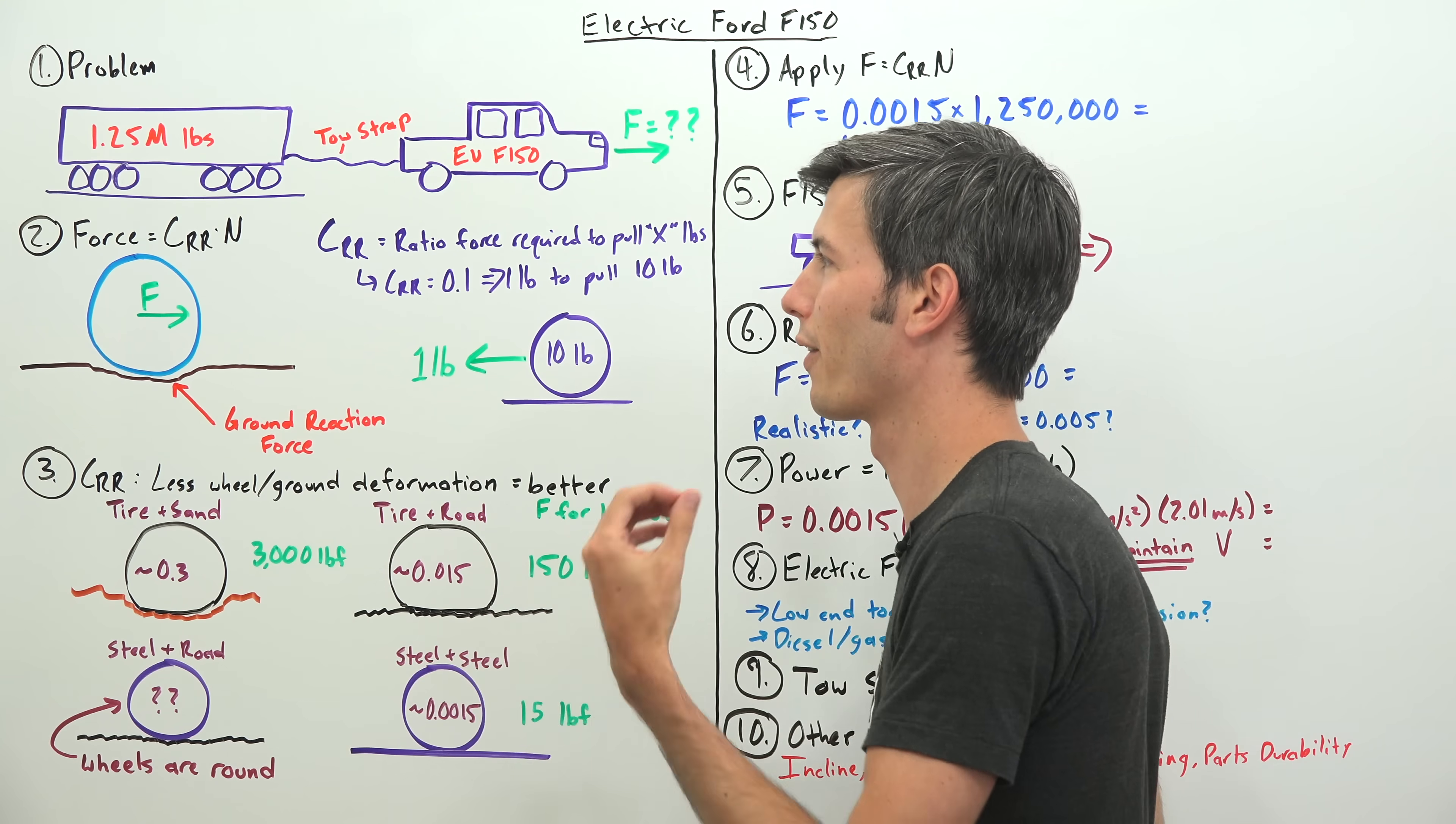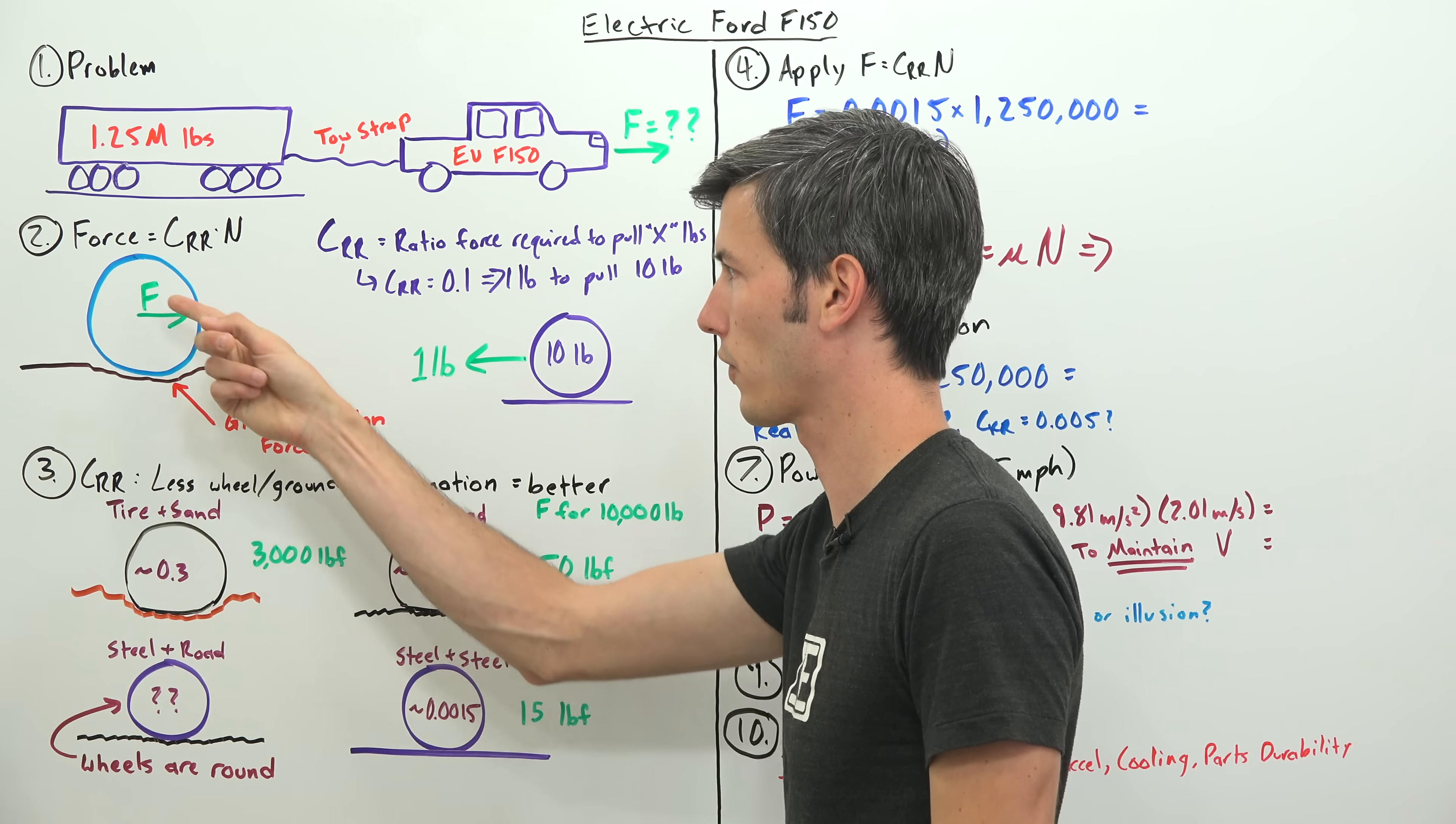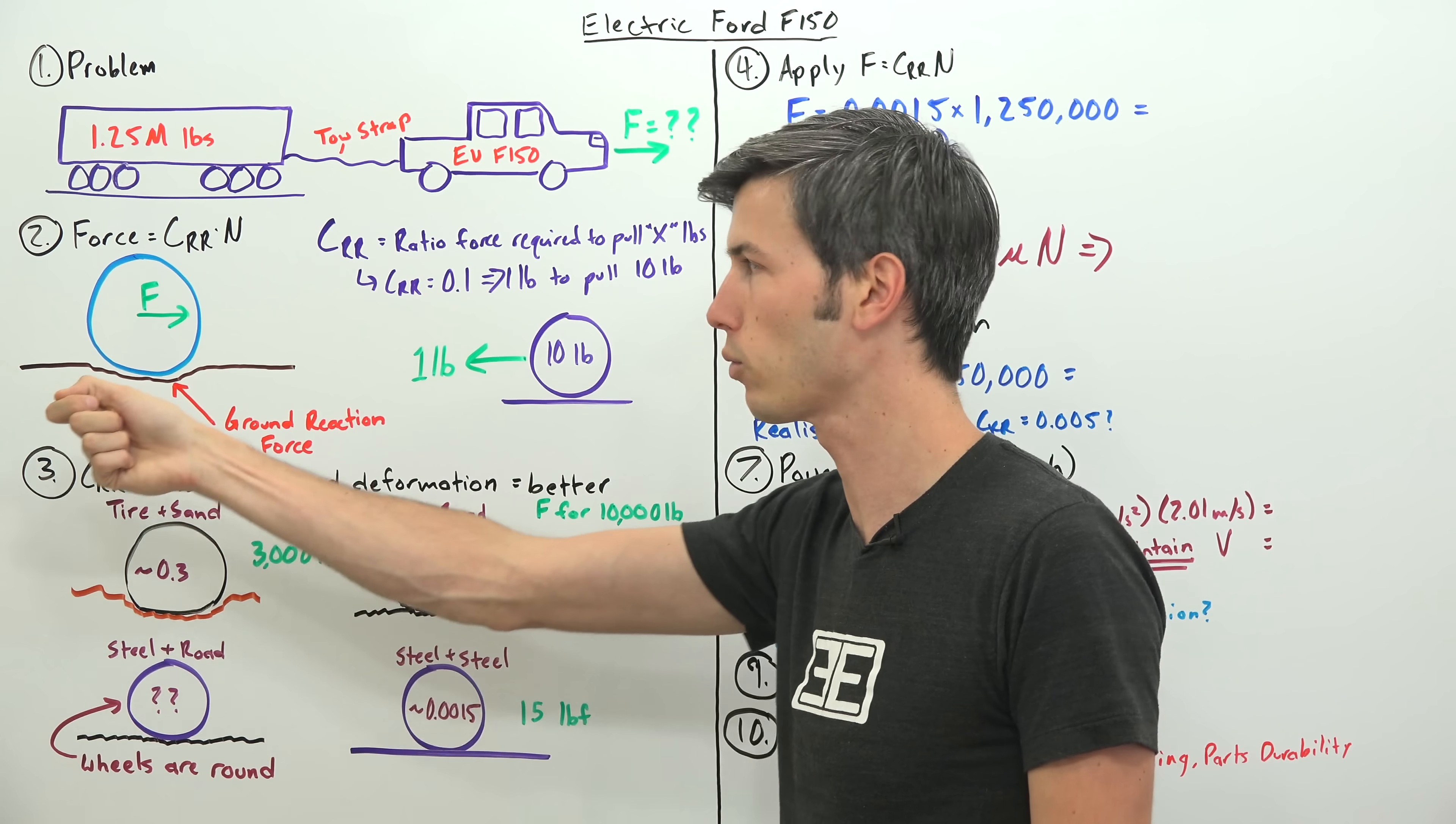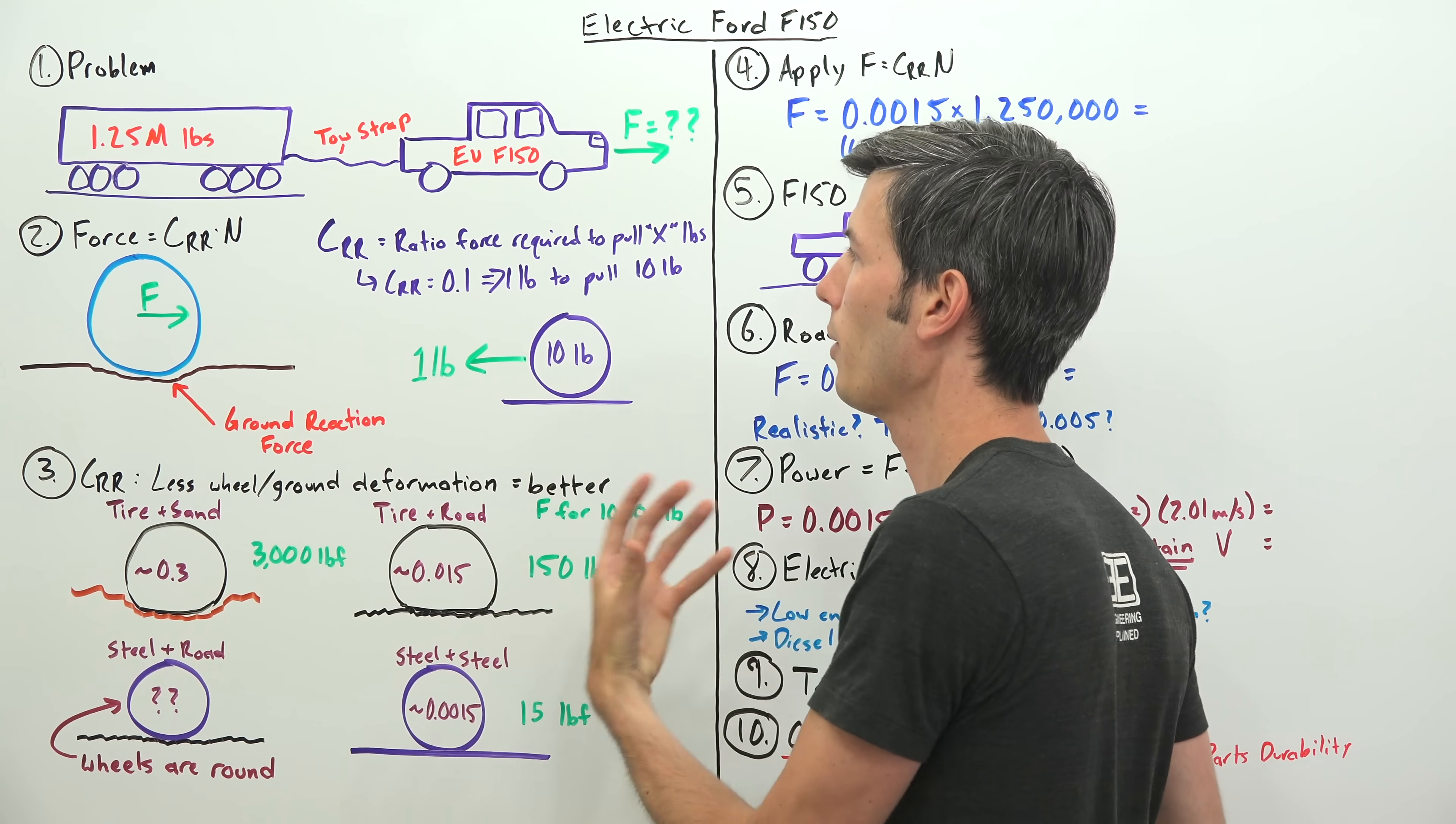Our equation to figure out this force: force equals the coefficient of rolling resistance multiplied by the normal force. We have this blue load, a wheel, we're trying to pull it along with a certain force. There's resistance from the ground to moving this load, a ground reaction force pushing against us. This is what is represented by our coefficient of rolling resistance.